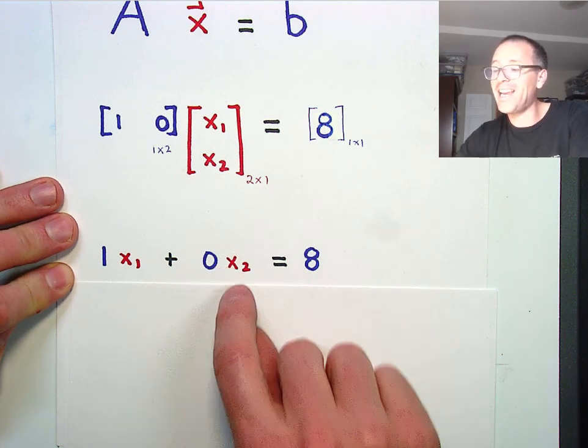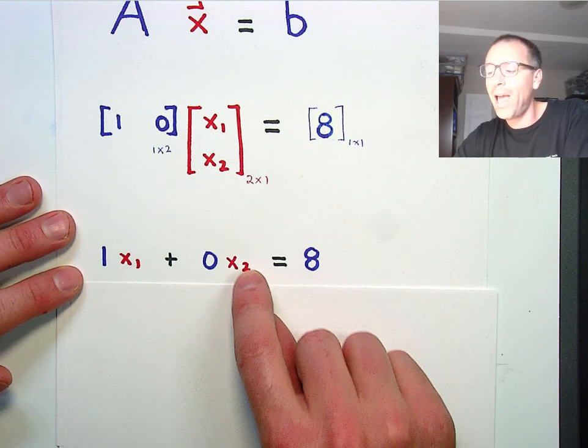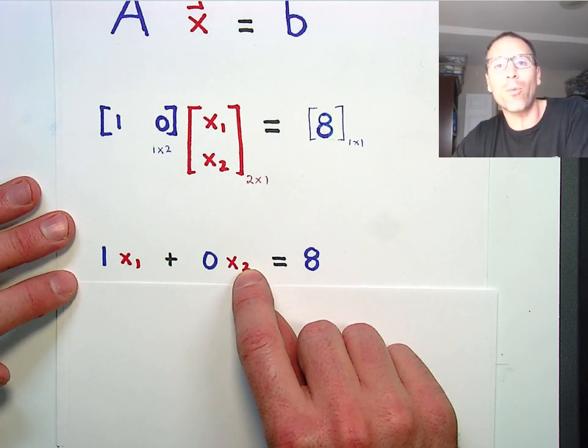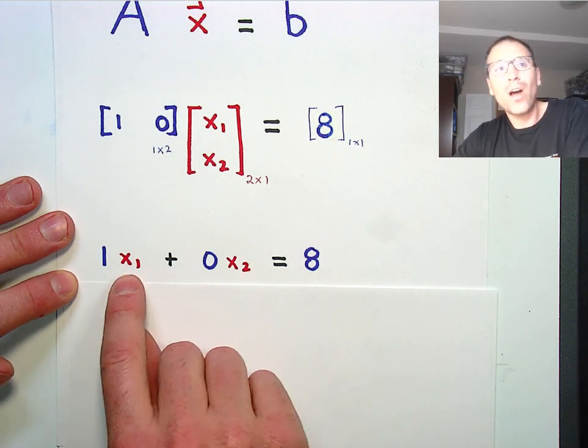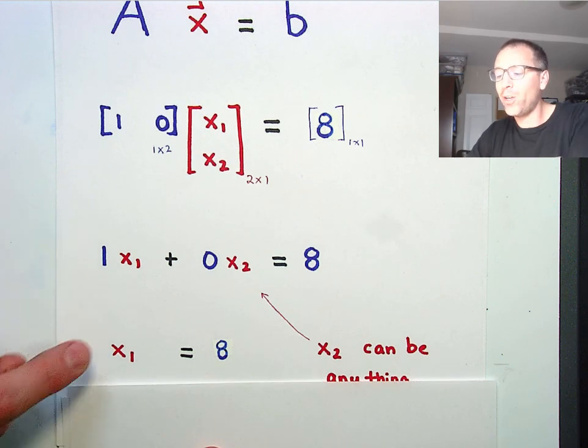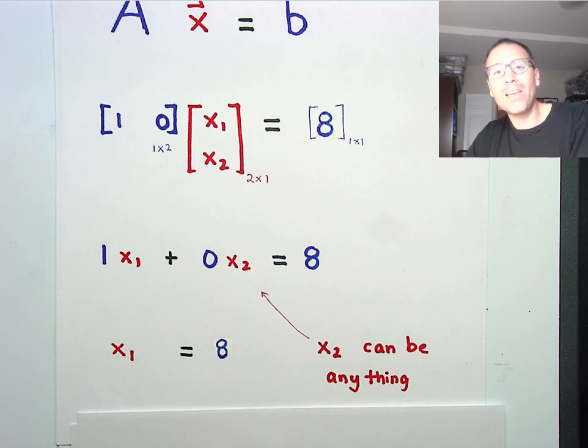It doesn't matter what x2 is. x2 could be 5, it could be 30, it could be negative 4. x2 has an entire free range. It's a free variable in that way. x1 does matter because 1 times x1 is just x1. And notice x1 has to be 8 in order to solve this. x2, to repeat, can be anything.